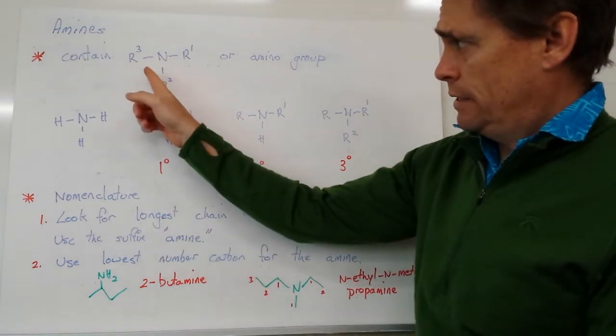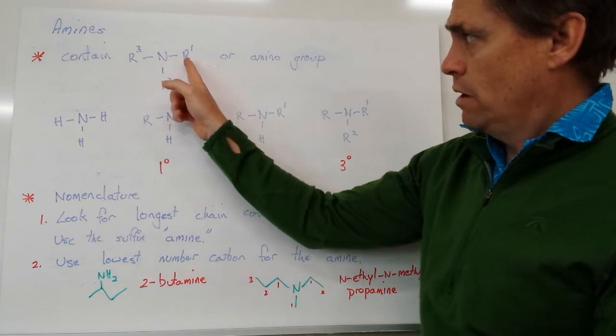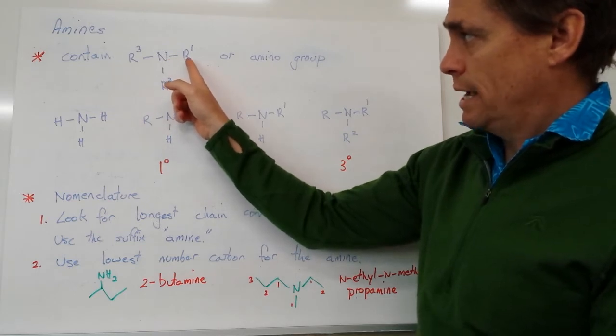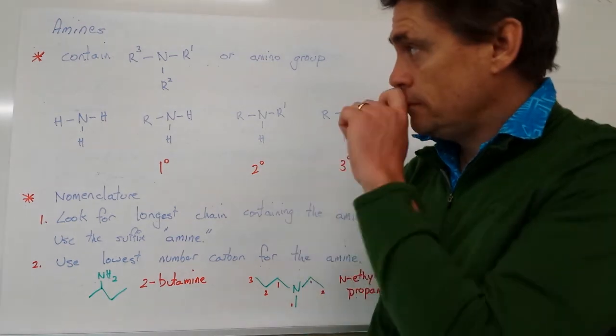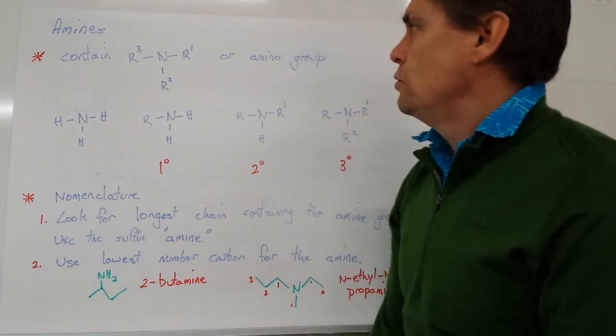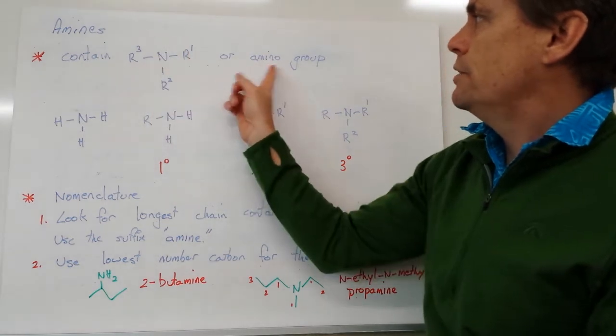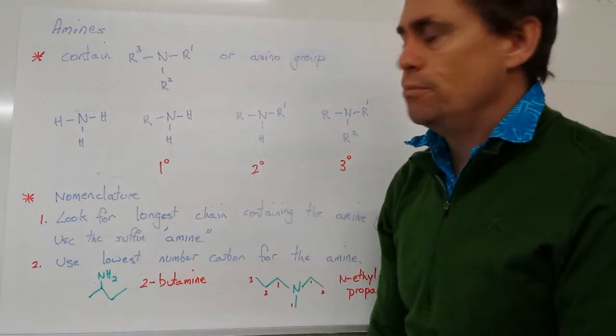So what I've given is the general structure here where we've got one carbon, one carbon chain, two carbon chains, three carbon chains. Now they can all be the same, or they can all be different, but this particular group here is known as an amino group.